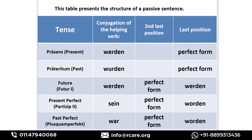In the present perfect form, we use the conjugation of 'sein' at the second position as the helping verb. 'Werden' is converted into its perfect form 'worden' and goes to the last position. The regular verb in perfect participle stays at the second-last position. The same structure applies to past perfect tense, except 'sein' is conjugated in past form as 'war'/'waren'. If you learn this table, you will have no problems forming passive sentences.